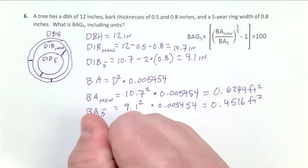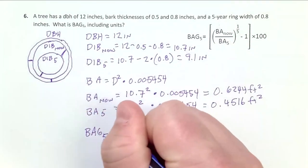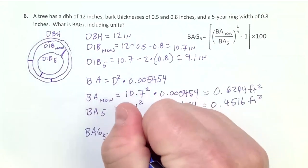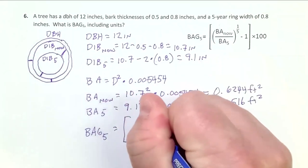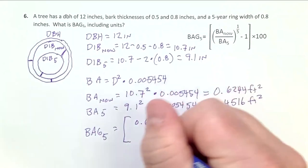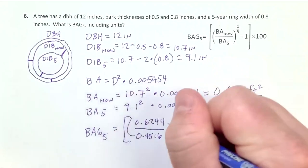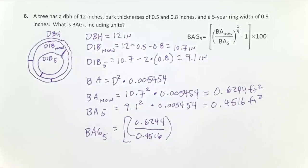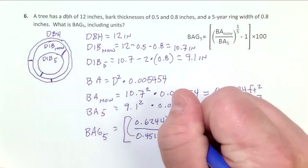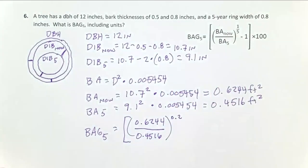So BAG, basal area growth in the last five years, equals 0.6244 divided by 0.4516. Order of operations: you can do that first and get that quantity, which is going to be something like one and a half. Now we raise it to the one-fifth power. If you're using a calculator, it's simpler to use a decimal. If you type 1 divided by 5 in your calculator, you'll see that equals 0.2. So I'm going to put 0.2 there because you can enter that more easily.